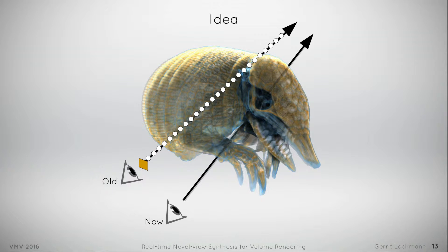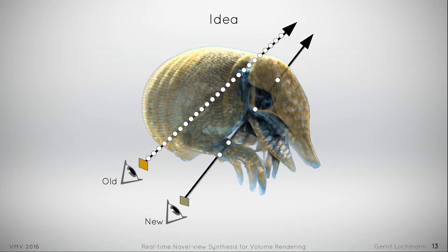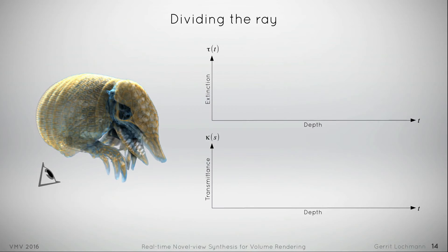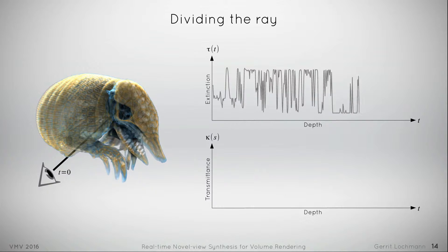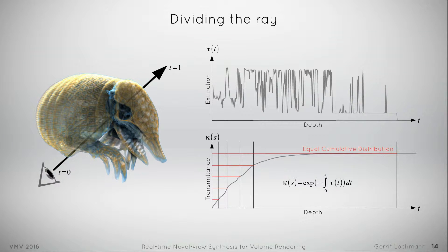Our core idea is to bundle the once-gathered ray into a few constant pieces. When we do that for each ray, we receive a layer structure. We can look up the pieces instead of single voxels, which takes much less computation effort. We divide a ray into analytically solvable pieces by first gathering the extinction along the view ray, second integrating the extinction according to the emission-absorption function, and third dividing the result by an equal cumulative distribution. By doing this, each piece has an equal important impact on the color result.